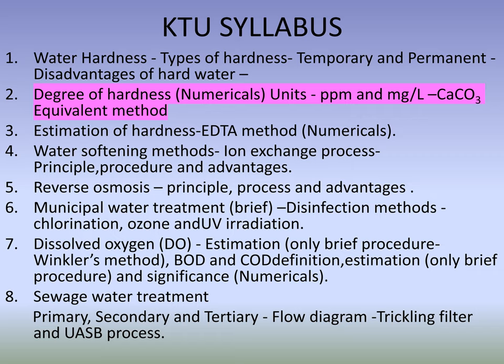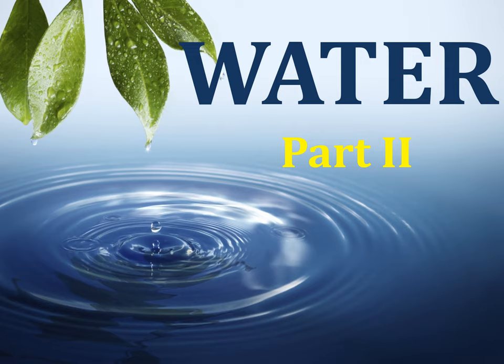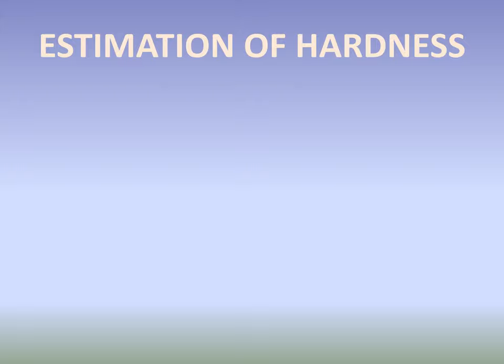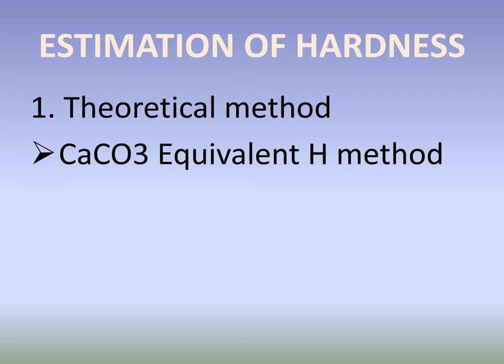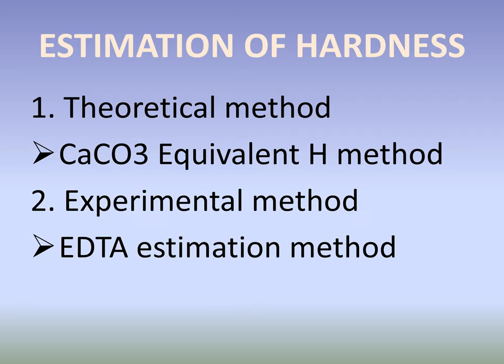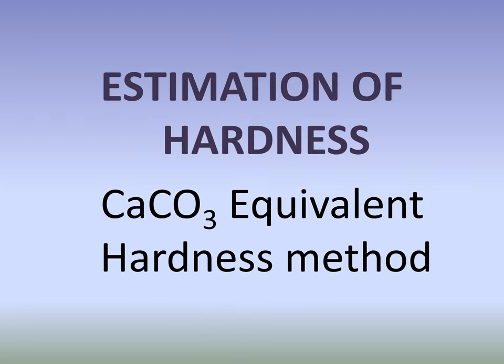Welcome to part two of water. The estimation of hardness can be done in two ways: one, a theoretical method — the calcium carbonate equivalent hardness method — and second, an experimental method — the EDTA estimation method. Today we are considering estimation of hardness by the calcium carbonate equivalent hardness method. Calcium carbonate is used here as a reference or standard, and let me try to convince you of its need by citing two examples.